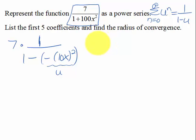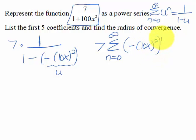So now I can express this as a power series. I'm going to write the 7 out in front, then n going from 0 to infinity of my u is negative 10x, that quantity squared, to the n.